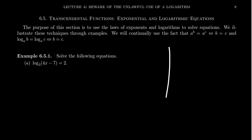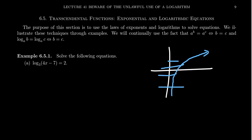Logarithms likewise are one-to-one functions. When you look at a graph of a logarithm, it passes the horizontal line test — it's one-to-one. So whenever you have an equation of the form log_A of B equals log_A of C, having the same base A, you can cancel out the logs and just get B equals C. That's going to be a very useful thing in solving logarithmic equations.